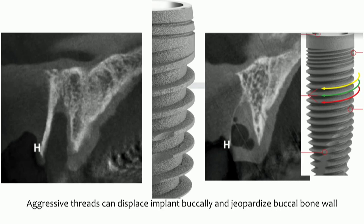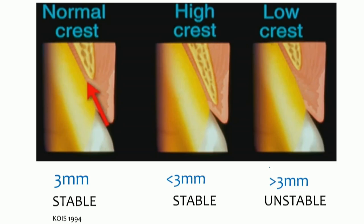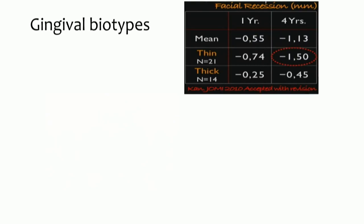This is important when placing implants with aggressive threads — you can do so when there is a large amount of palatal bone, but if palatal bone is limited, it is better to choose a less aggressive design, because aggressive threads can displace the implant buccally and jeopardize the buccal bone wall. Also, we need to know how far the bone is below the facial gingiva. Research showed that if this distance is 3 mm or less, we will have a stable situation; otherwise the situation becomes unstable. Gingival biotype is also very important for immediate implant placement.